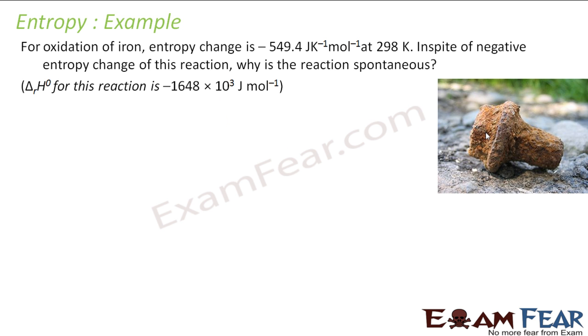The question says: for the oxidation of iron, that is the rusting of iron actually, the entropy change is -549.4 joule per kelvin per mole at 298 K. In spite of negative entropy change of this reaction, why is this reaction spontaneous? The reaction for this is: if you have iron, you oxidize this to Fe2O3. Balance this. This is my balanced reaction. This is solid, this is gas, and this is also solid. This is the rusting of iron equation we have.